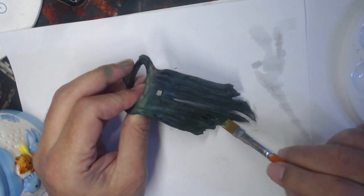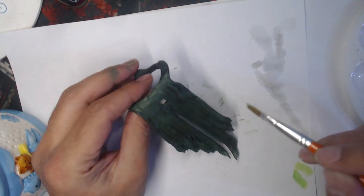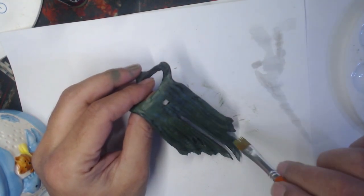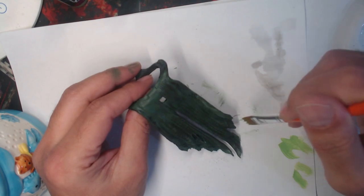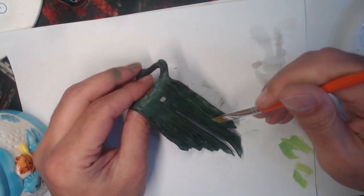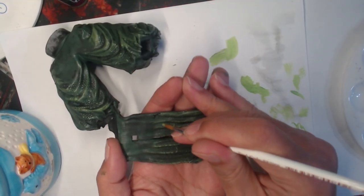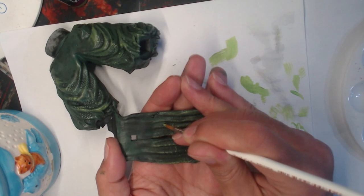Next, I gave it another dry brush of Vallejo Goblin Green and I focused this on the folds and any areas that I felt that were too dark. Finally, I finished up the cloak with Vallejo Escorbrina Green and just like with the pants, I went in with a detail brush to pick out random stitches to give it a bit more of a tattered look.